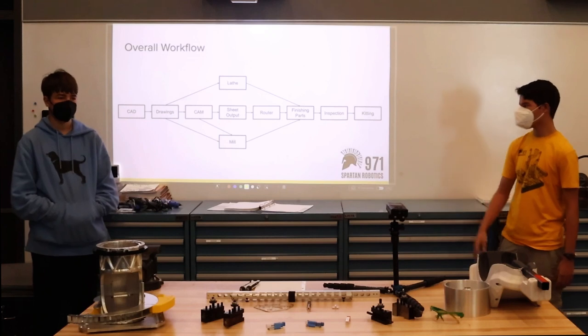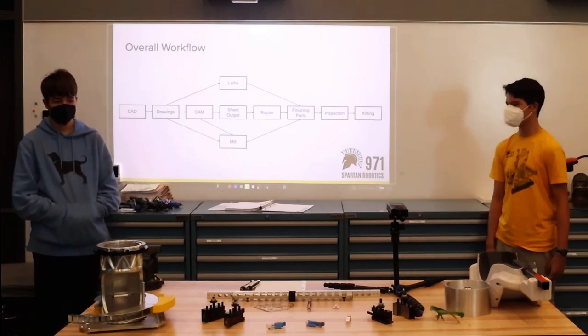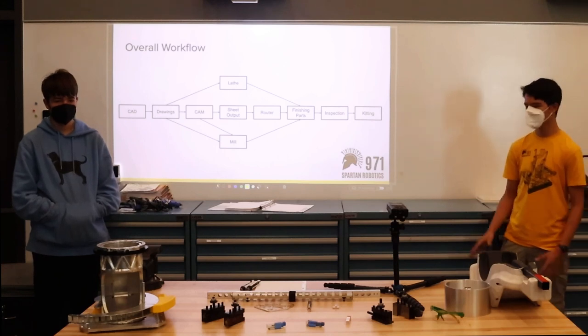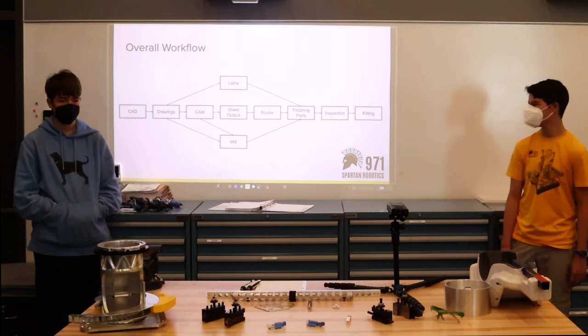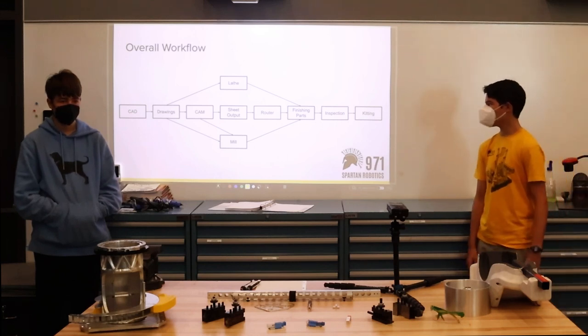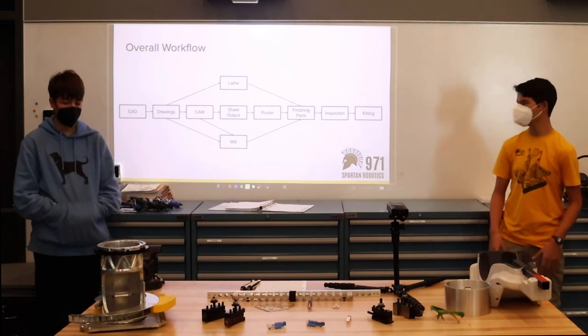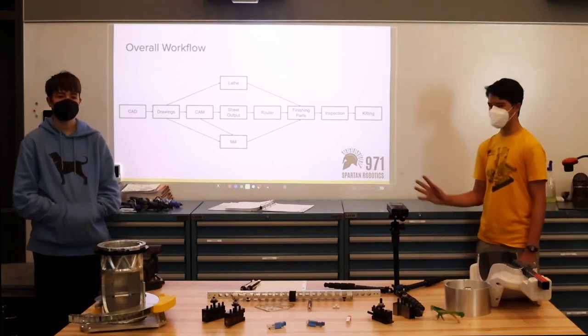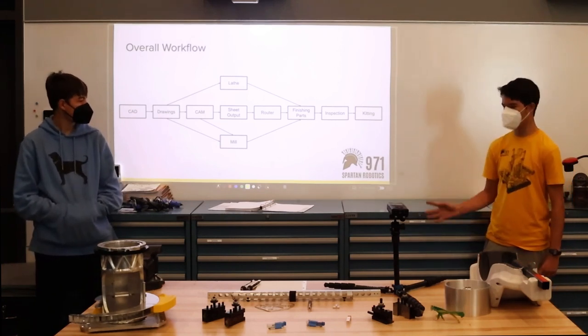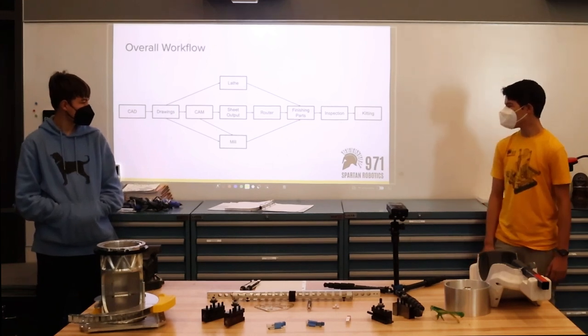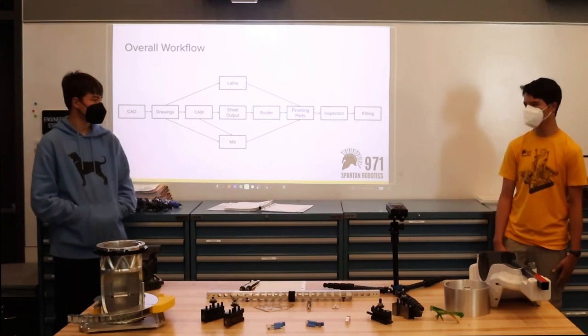So this shows our overall workflow. We usually start from our CAD where we design it. For people that don't know what CAD is, it's a software that basically you can visualize how the part is going to be in 3D, and you can make a lot of precise changes. After that, for all the parts that we're making, we make a drawing which shows the critical dimensions. For the lathe and the mill, the manufacturer will use those drawings to make the parts, but for the router it's just mainly for inspection to make sure everything's in tolerance, everything's the right size.